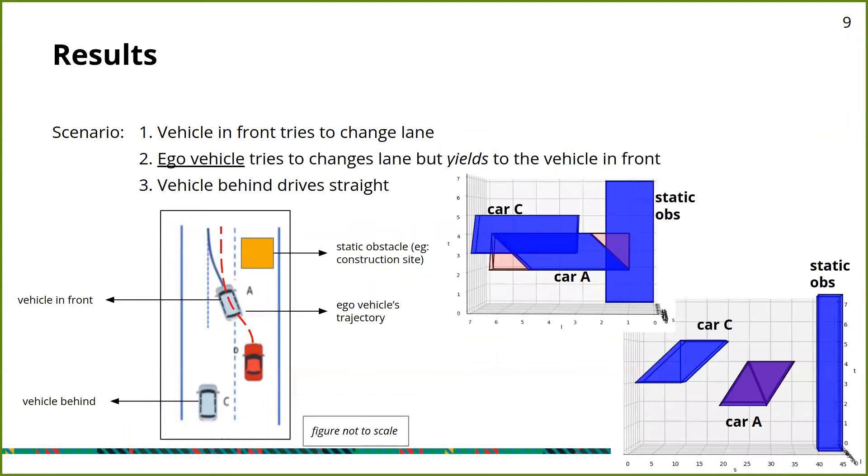Results. We consider a scenario on the road where there is a static obstacle in the same lane as that of the ego vehicle. We consider a car A which is in front of the ego vehicle. Both of these need to change their lanes because of the yellow obstacle we see on the left. There is a vehicle behind the ego vehicle, which is car C, but it lies in the safe lane so it can continue going straight. We can model this scenario in the SLT graph using the plots shown on the right.